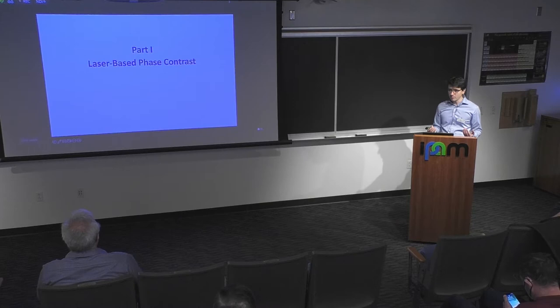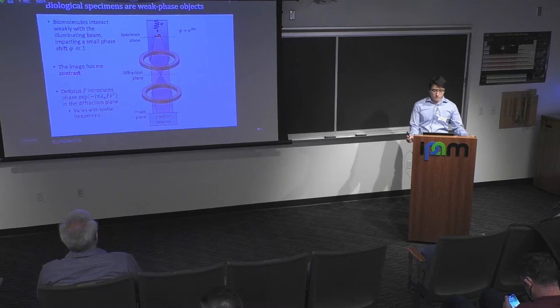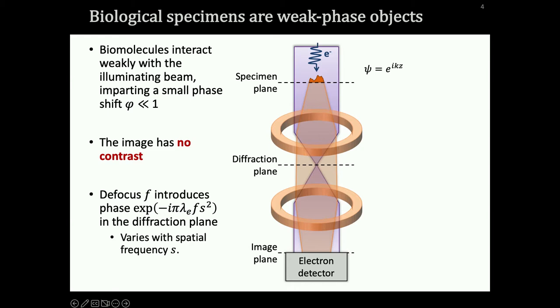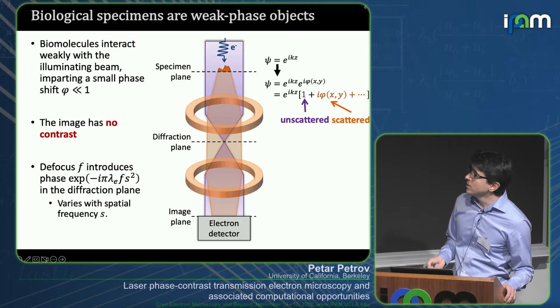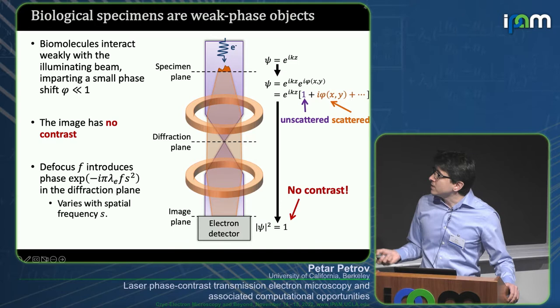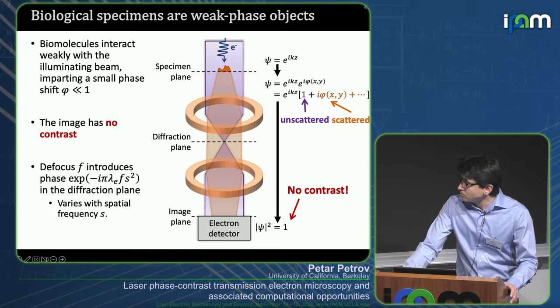In this first part, I want to think about how biomolecules behave in the microscope and why phase contrast is worth doing. Biomolecules in a TEM are weak phase objects — they interact very weakly with the illuminating electron beam, imparting a small phase shift phi. When we send a plane wave electron through the specimen, we get an unscattered component and a scattered component containing the information phi about the biomolecule. Unfortunately, if we measure the square modulus on the electron detector, we have no information about phi — no contrast.